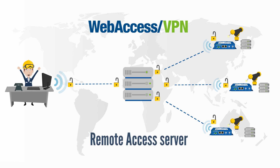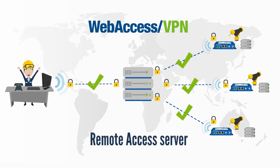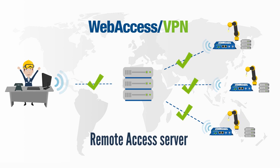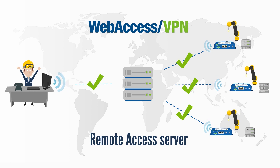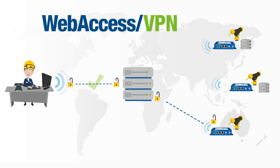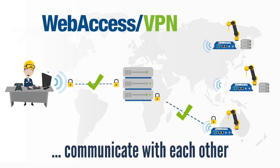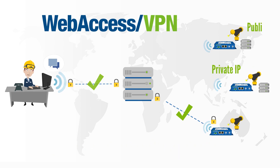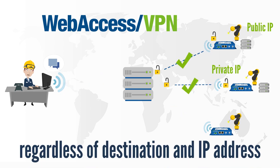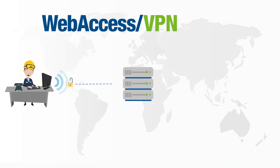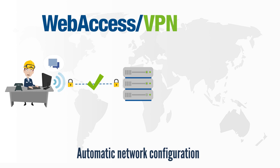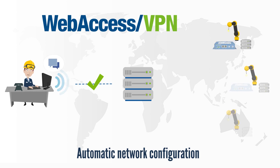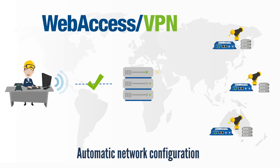Web Access VPN is a remote access server which connects the routers and robots connected to them into one emulated LAN network. So the robots can freely communicate with me regardless of destination and IP address. I can easily configure remote networks to make them reachable — just plug in the router and it is ready.